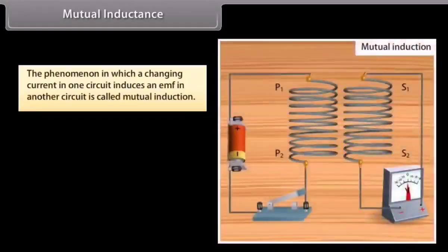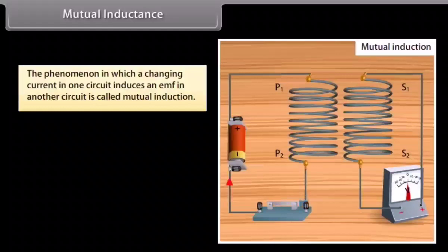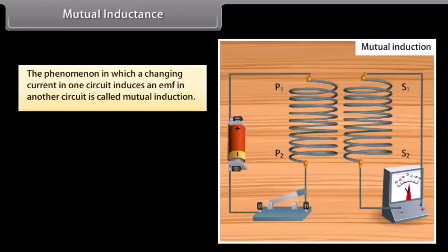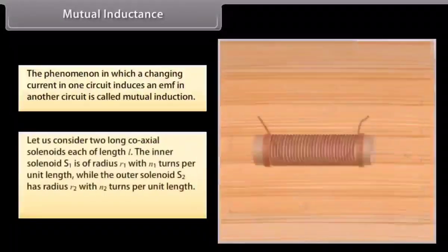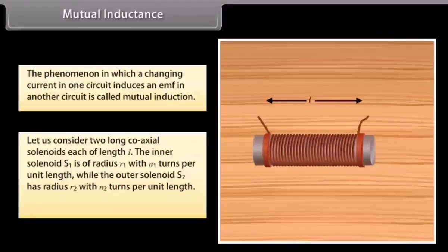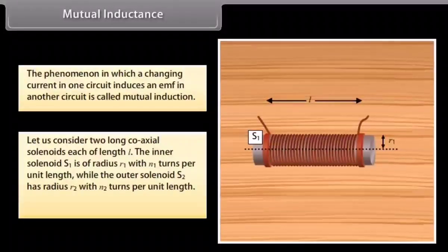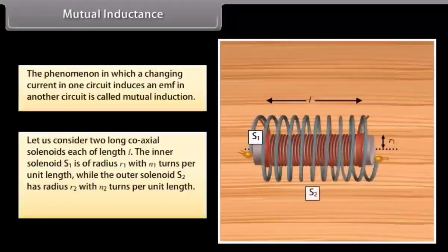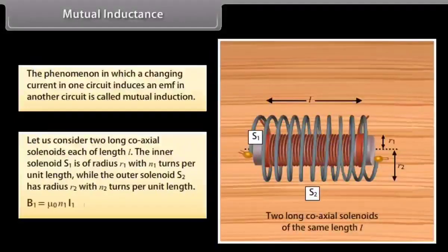Mutual inductance: The phenomenon in which a changing current in one circuit induces an EMF in another circuit is called mutual induction. Consider two long coaxial solenoids each of length L. The inner solenoid S1 has radius R1 with N1 turns per unit length, while the outer solenoid S2 has radius R2 with N2 turns per unit length.